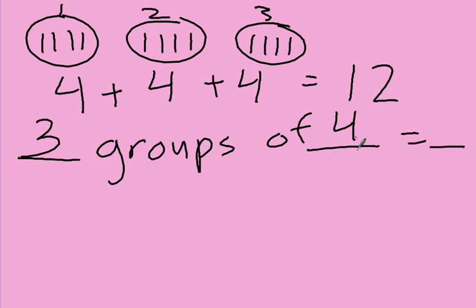Three groups of four — how much is that? Three groups of four, like we added them up — one, two, three, four, five, six, seven, eight, nine, ten, eleven, twelve.